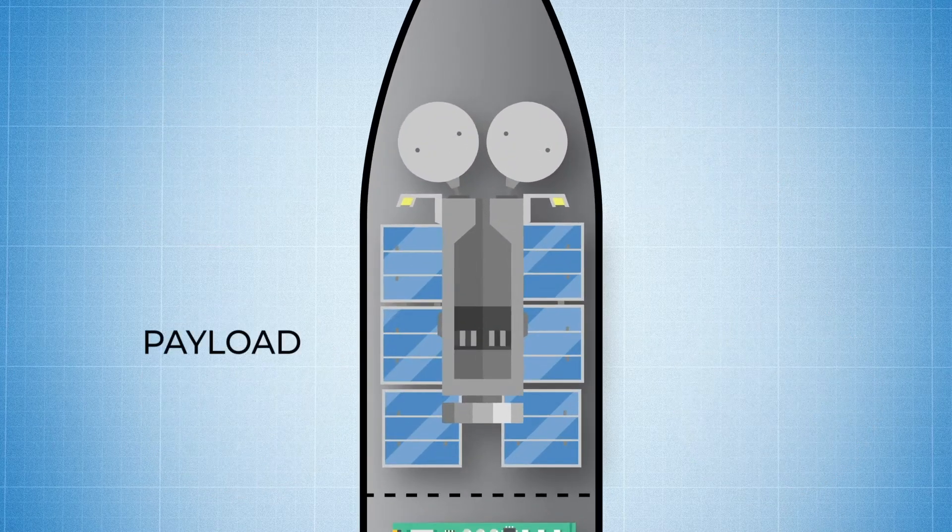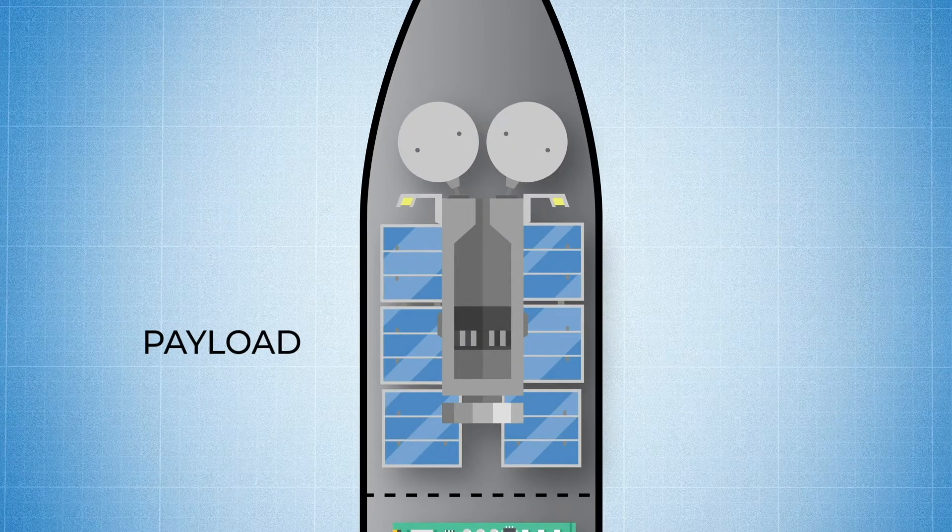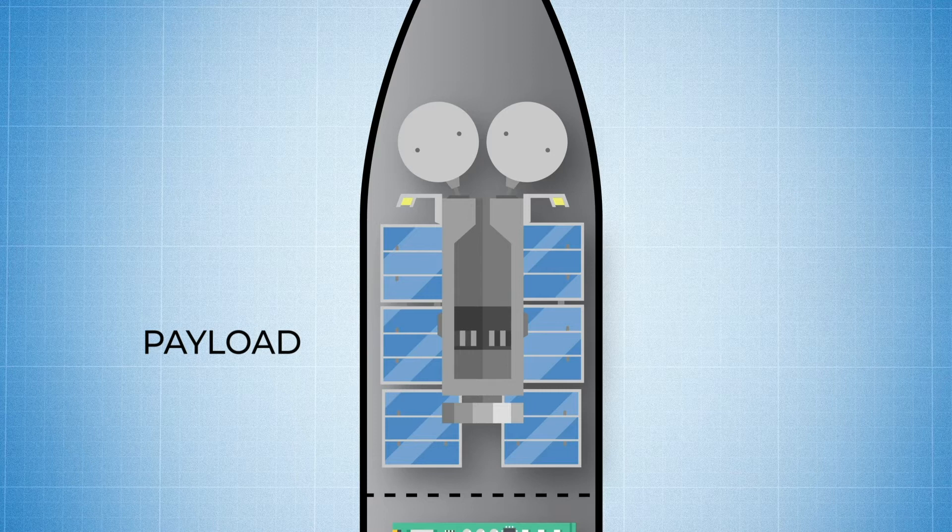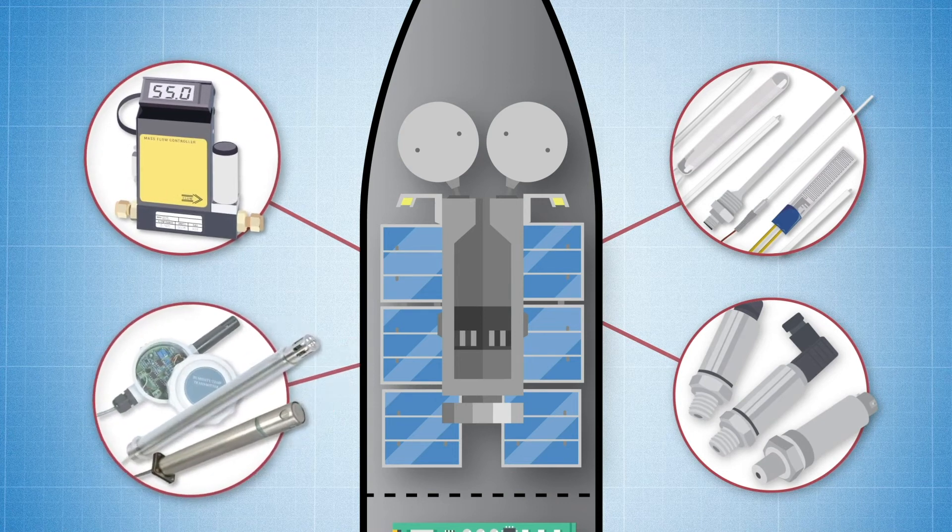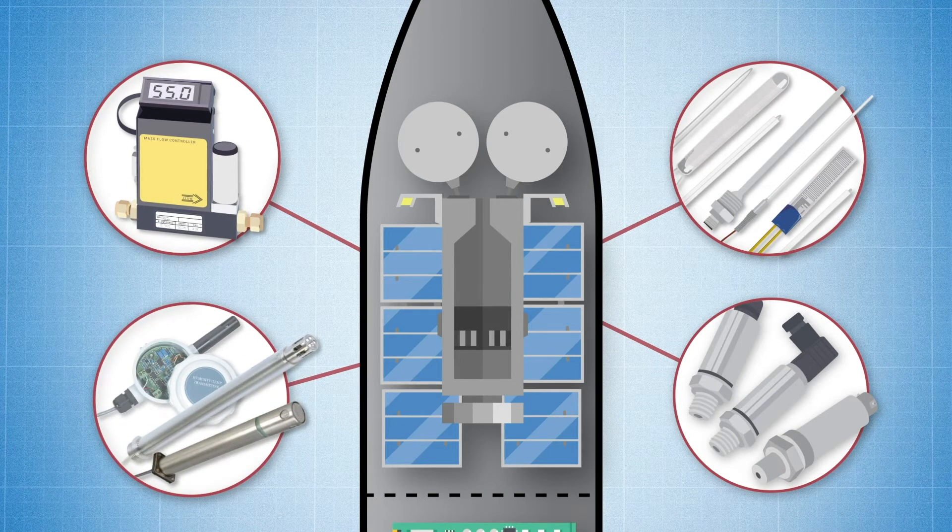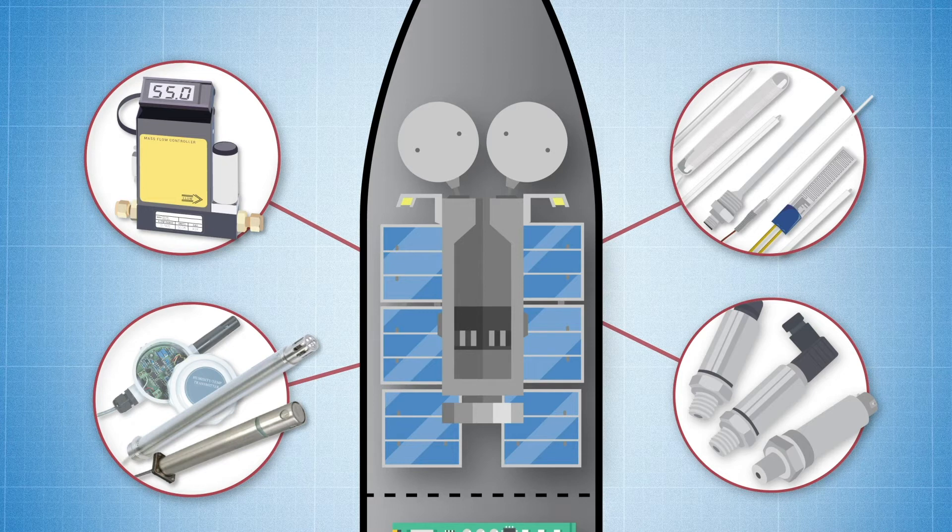And that brings us to the payload. Whether the payload is a satellite or a team of astronauts, active thermal management systems using a myriad of temperature, pressure, gas, and humidity sensors monitor and control the conditions in order to provide the correct environment for the occupants and systems.